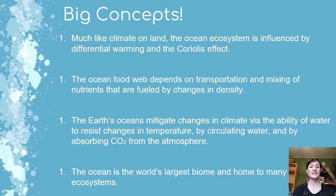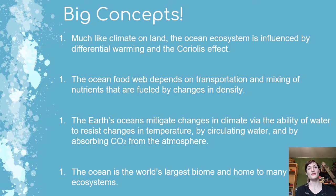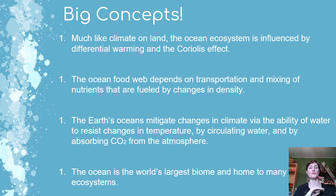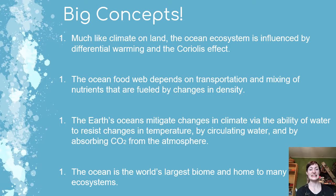These big concepts cover all of the videos you're going to watch. Much like climate on land, the ocean ecosystem is influenced by differential warming and the Coriolis effect. The ocean food web depends on transportation and mixing of nutrients, fueled by changes in density. Earth's oceans mitigate changes in climate via the ability to resist changes in temperature, by circulating water, and by absorbing CO2 from the atmosphere. The ocean is the world's largest biome and home to many diverse ecosystems.